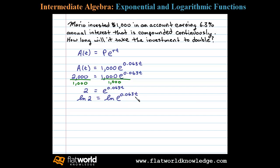the power rule for logarithms. In other words, we can write this exponent as a coefficient. Doing that, we have the natural log of 2 equals 0.063 times t times the natural log of e. Now we know the natural log of e is 1, so we have the natural log of 2 equals 0.063 times t.